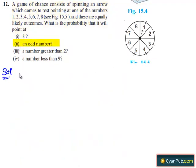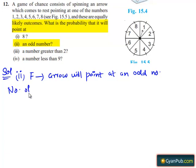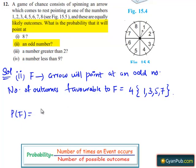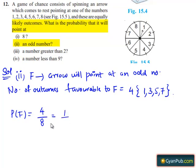Now let's move on to the second part. Let F be the event that the arrow will point at an odd number. The number of outcomes favorable to event F equals 4, which are 1, 3, 5, 7. We know that the total number of possible outcomes equals 8. Then P(F) equals 4 divided by 8. Since 4 is a common factor, this simplifies to 1/2. Therefore, the probability that the arrow will point at an odd number is 1/2.